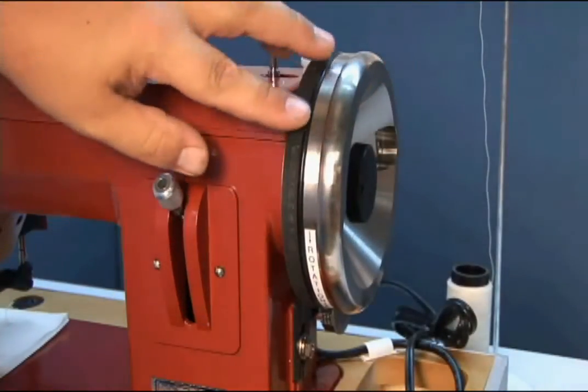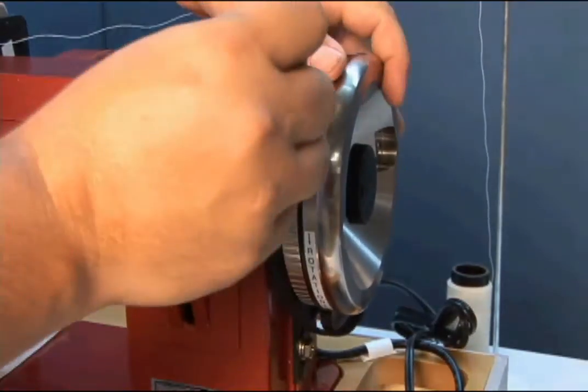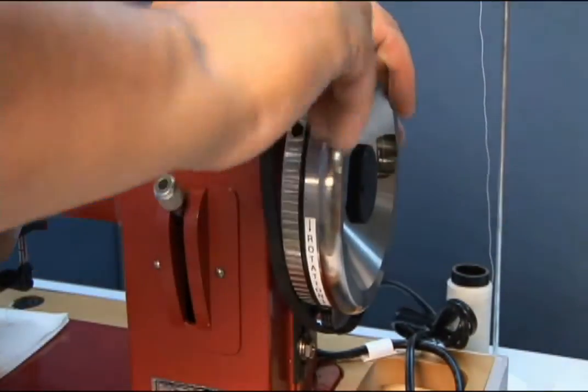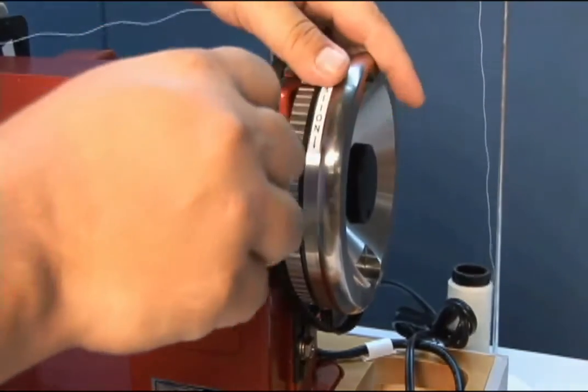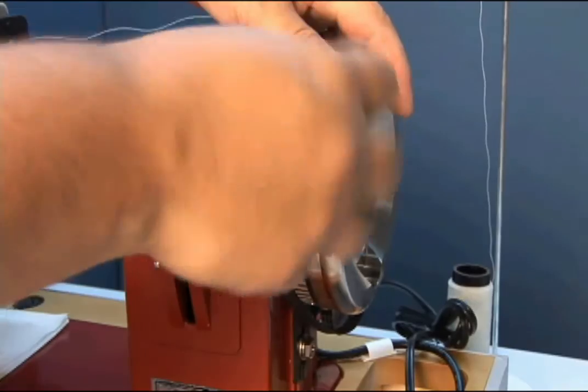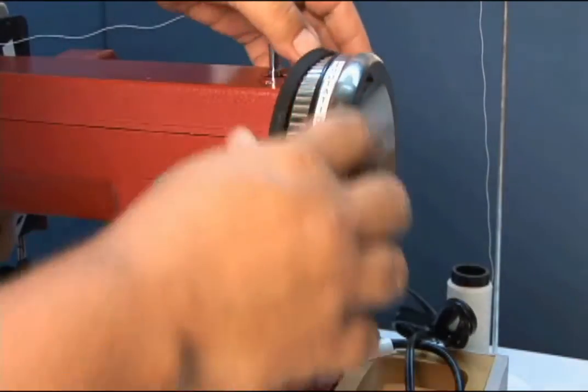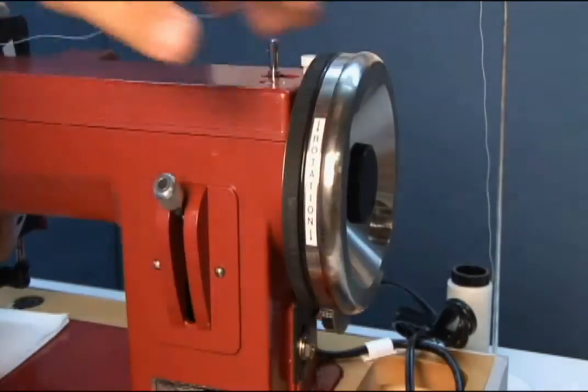Now don't forget, underneath this belt, there are two Allen head set screws. You can lock those down with the Allen wrench provided, and your balance wheel will never slip on the shaft. However, you can't wind bobbins without the needle going up and down. So you have to decide which you want, power or the ease of winding bobbins.